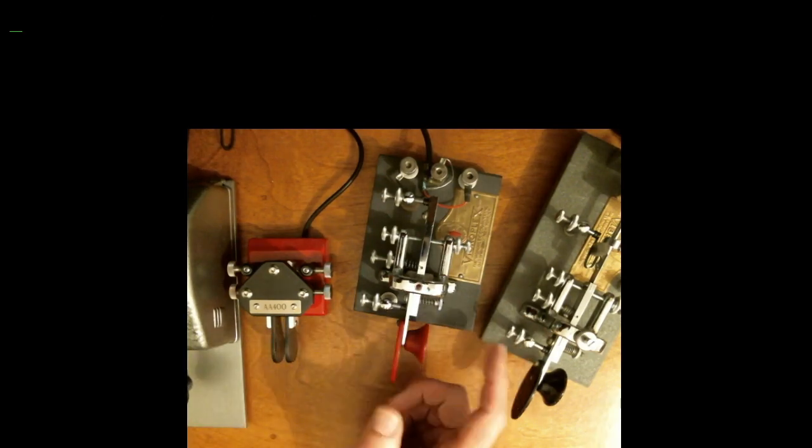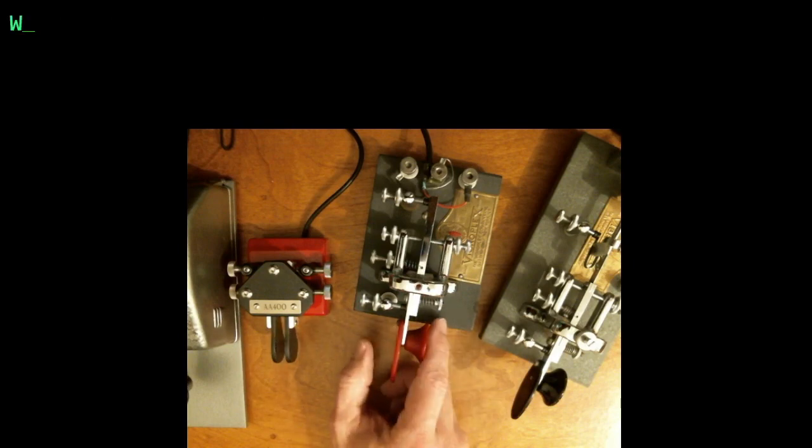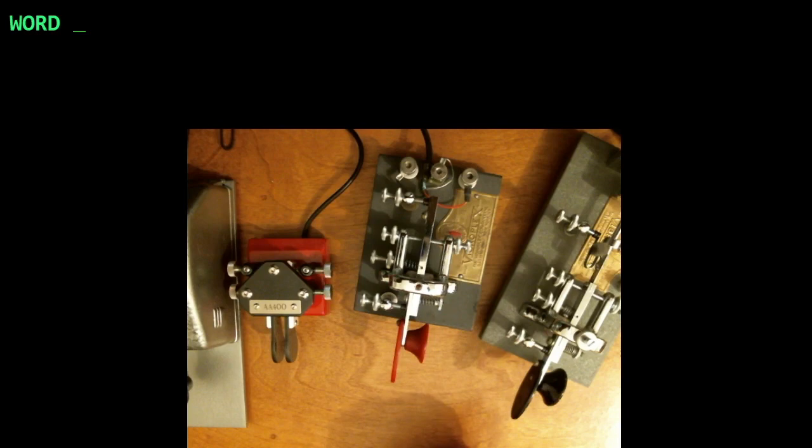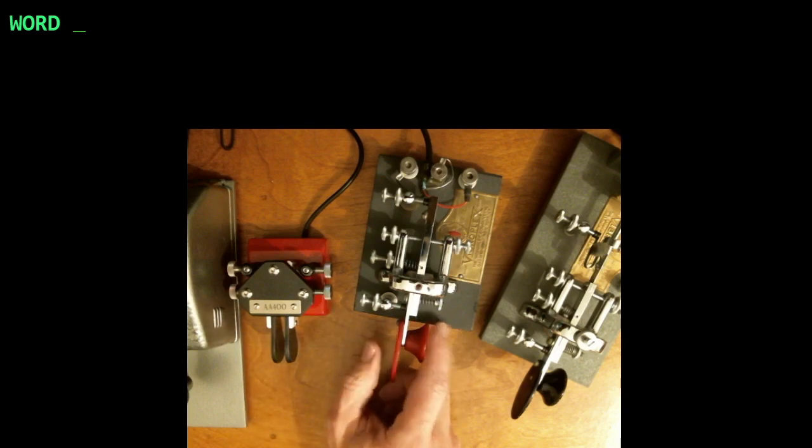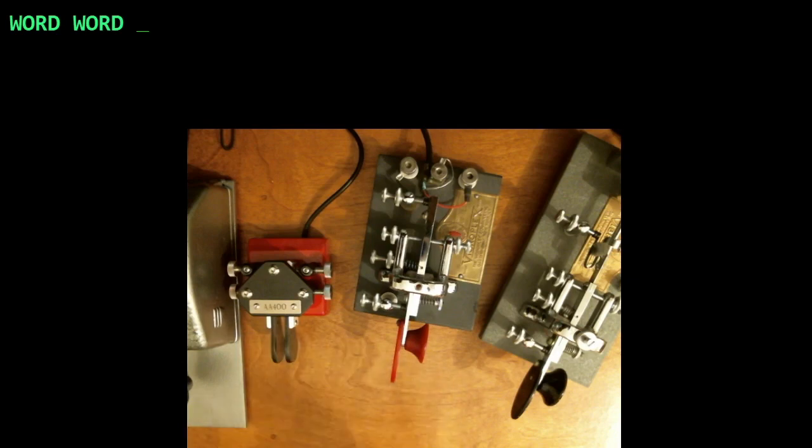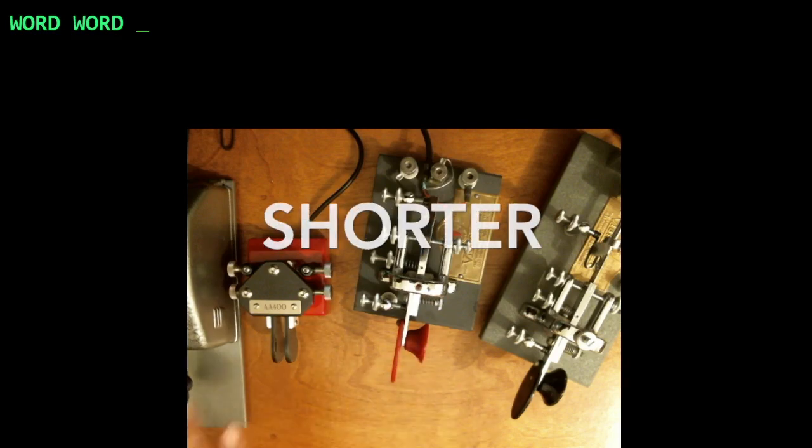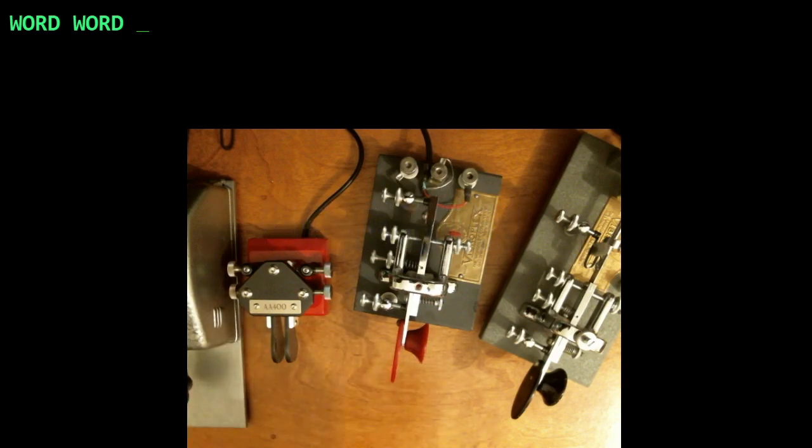If we send a word, we're putting some space, a dah's worth of space, between each of the letters. And if I was sending faster, the space would be shorter, because the time that a dah would take at a higher speed would be longer. If I was sending at a slower speed, the space between the letters would be longer.